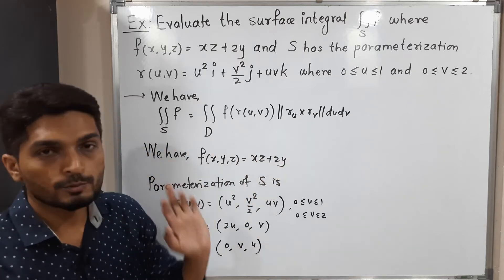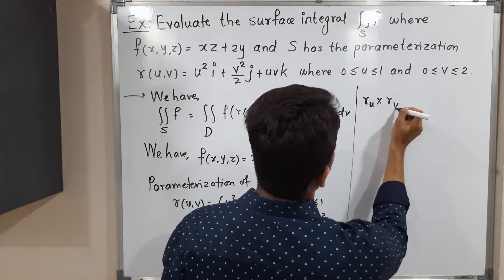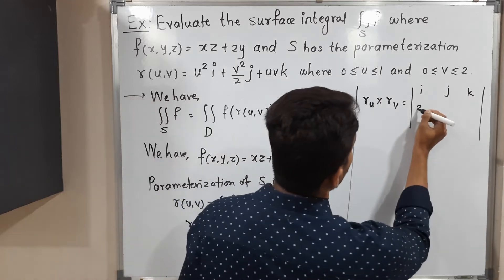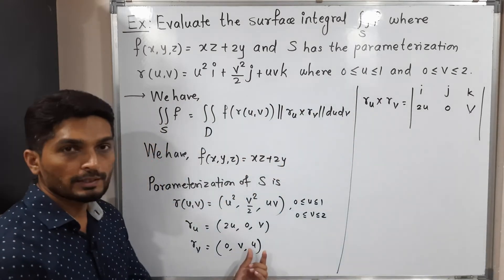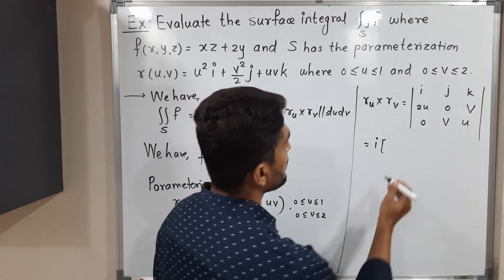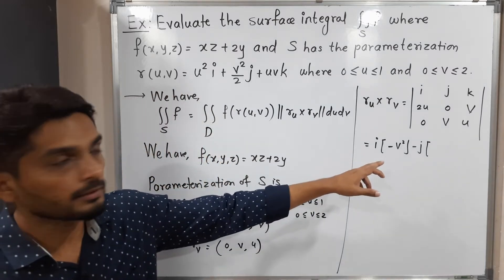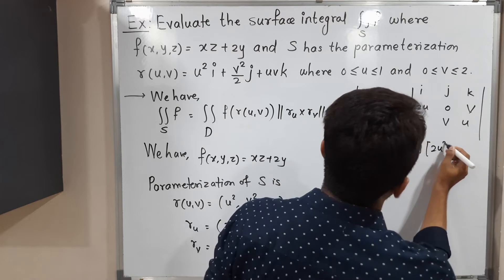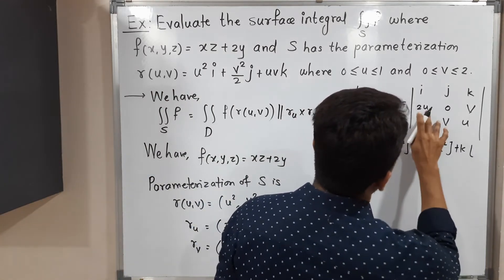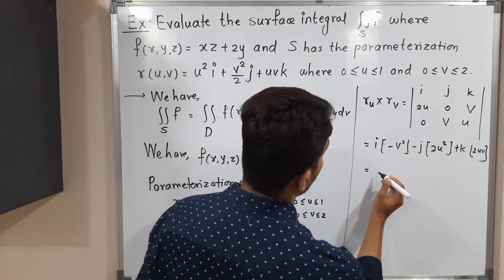Now we find the cross product r_u × r_v by solving the determinant with rows i j k, then (2u, 0, v), then (0, v, u). The i component: (0·u − v·v) = −v²; the j component (with minus sign): −(2u·u − v·0) = −2u²; and the k component: (2u·v − 0·0) = 2uv. So r_u × r_v = (−v², −2u², 2uv).